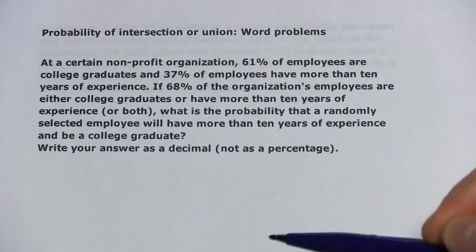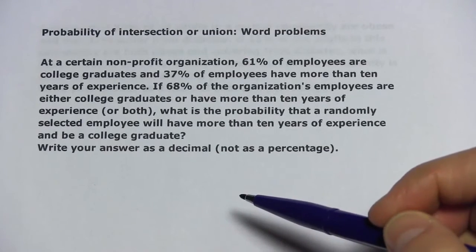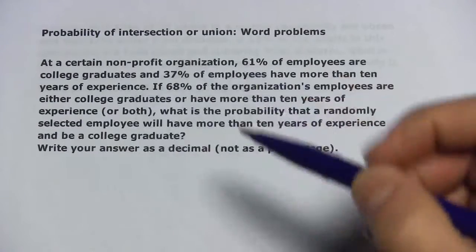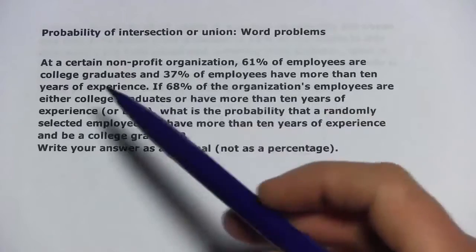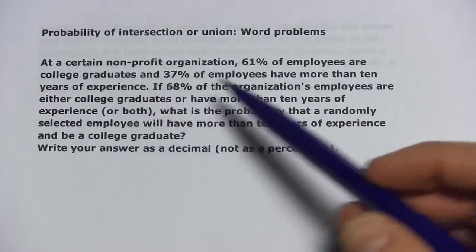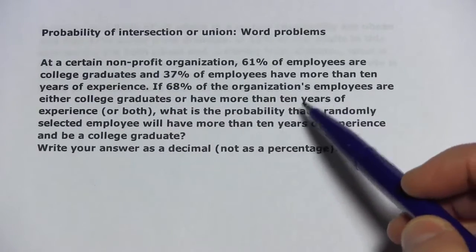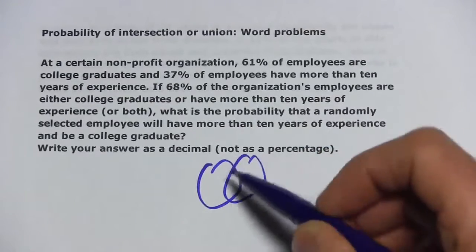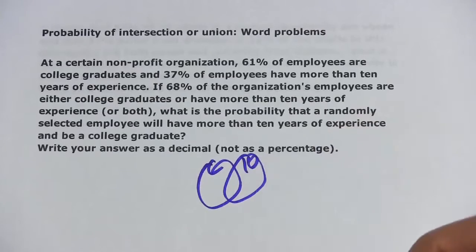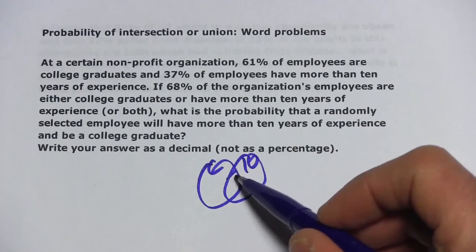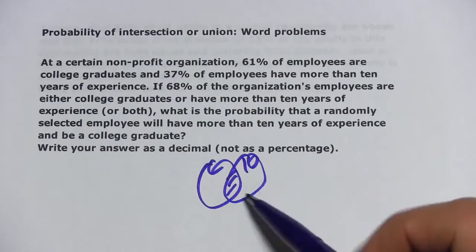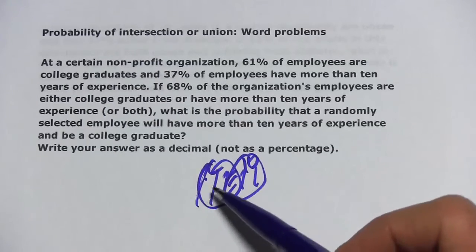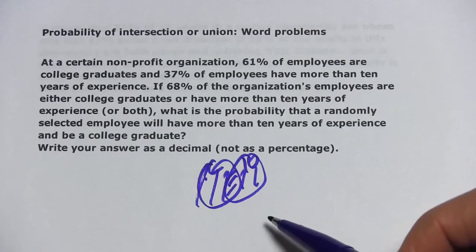In these problems, we're looking at the probabilities of intersections or unions. There are a couple of qualities in this problem. Employees can either be college graduates, have more than 10 years of experience, or both. You can think about this with a Venn diagram — one circle for college graduates, the other for 10 years of experience. The ones who have both are the intersection, and the union is everything: those who have one or the other or both.